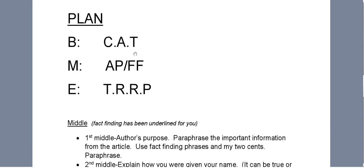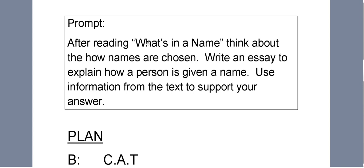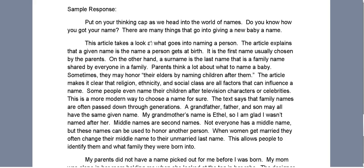Finally, the T. The T stands for tell the reader what you're going to write about. Always look back at the prompt to make sure you're writing about the correct thing. Today we're explaining how a person is given a name. I've written, there are many things that go into giving a new baby a name. Please write a sentence telling what you're writing about now.